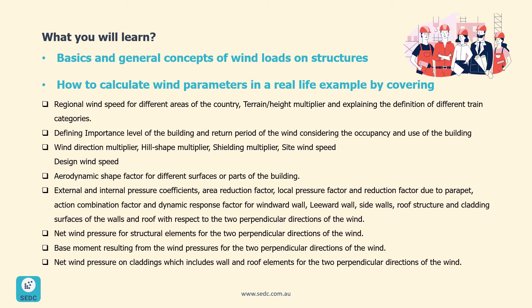These parameters include regional wind speed for different areas of the country, terrain or height multiplier and explaining the definition of different terrain categories, defining importance level of the building and return period of the wind considering the occupancy and use of the building, wind direction multiplier, hill shape and shielding multipliers, site wind speed and finally design wind speed.